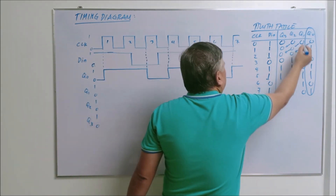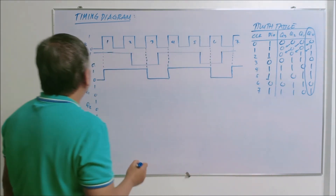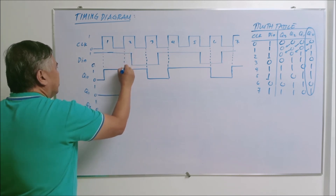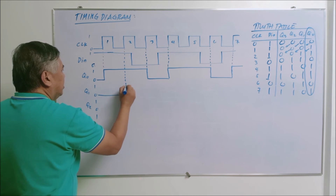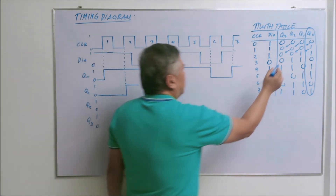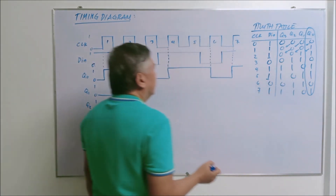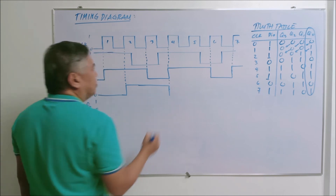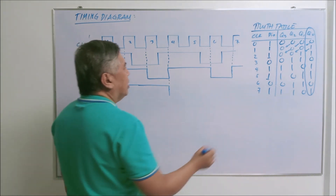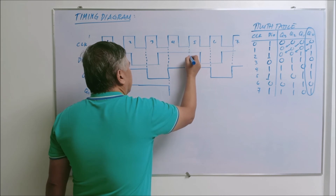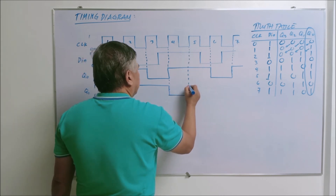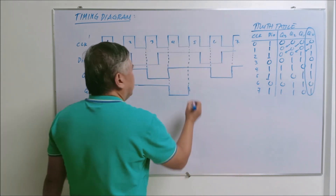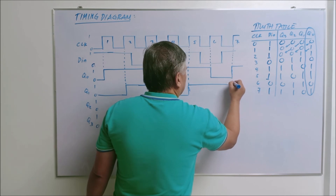For Q sub one, the output becomes one on the second positive triggering and remains one through the third. So it starts with zero, becomes one on the second positive triggering, then becomes zero on the fourth positive triggering. It becomes one again on the fifth positive triggering, then becomes zero again on the seventh positive triggering of the clock.